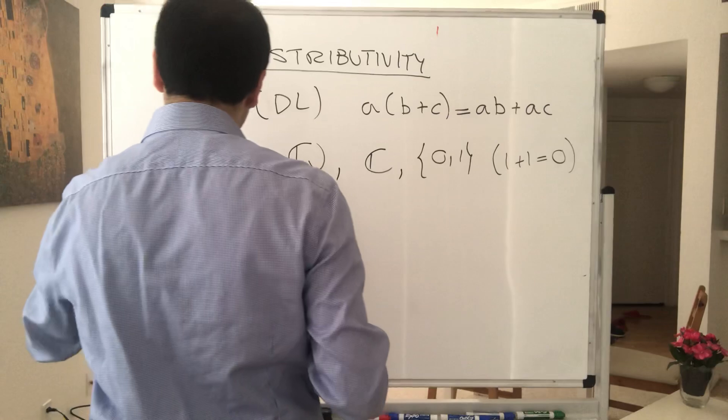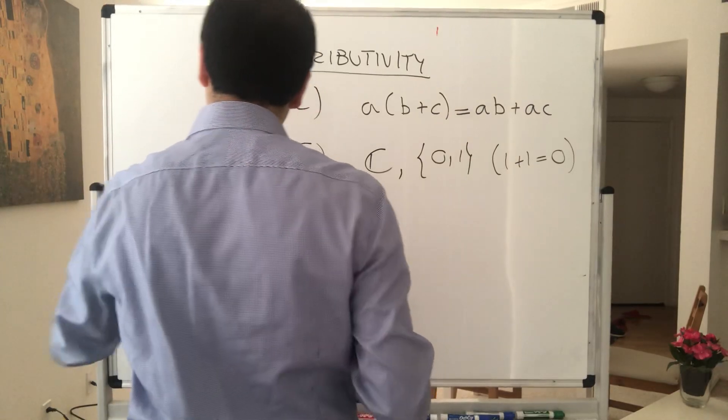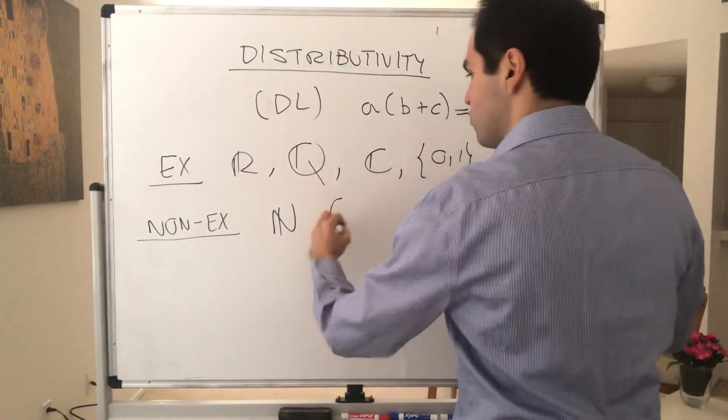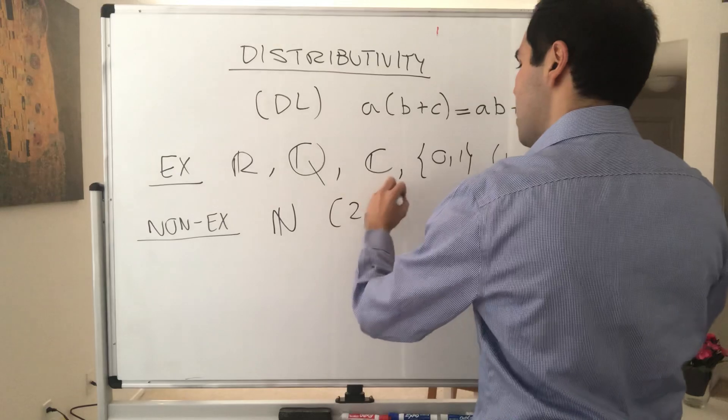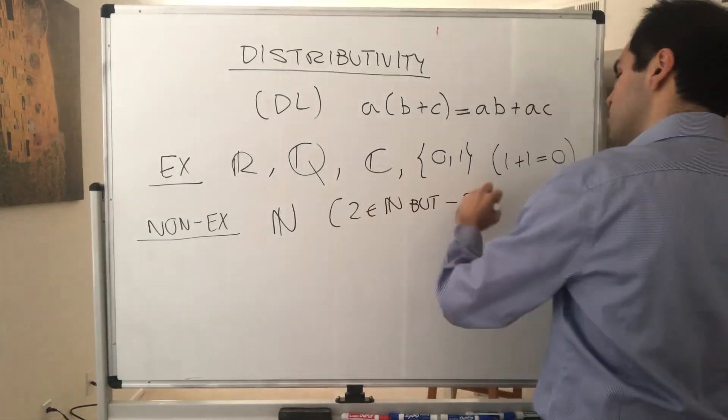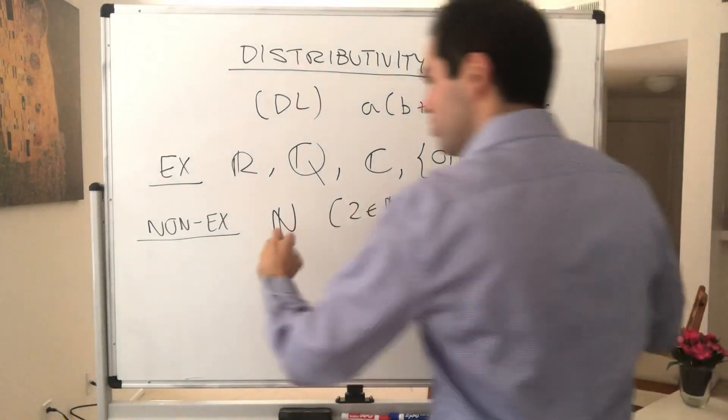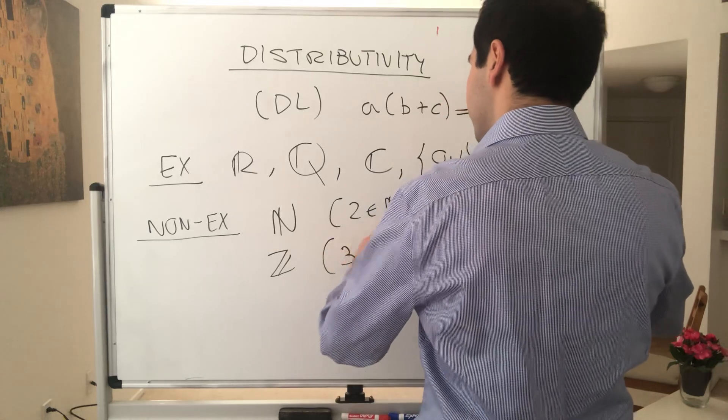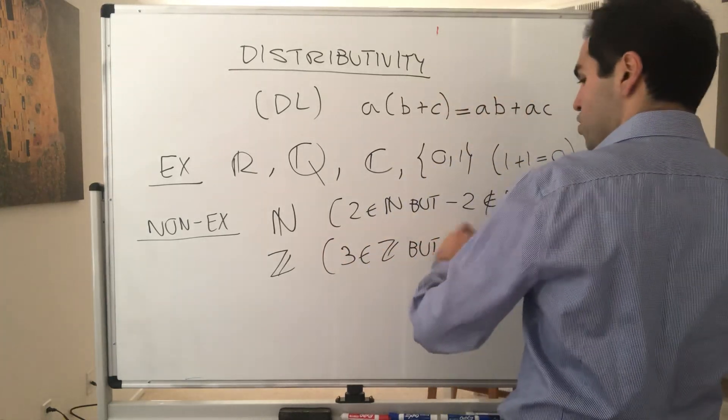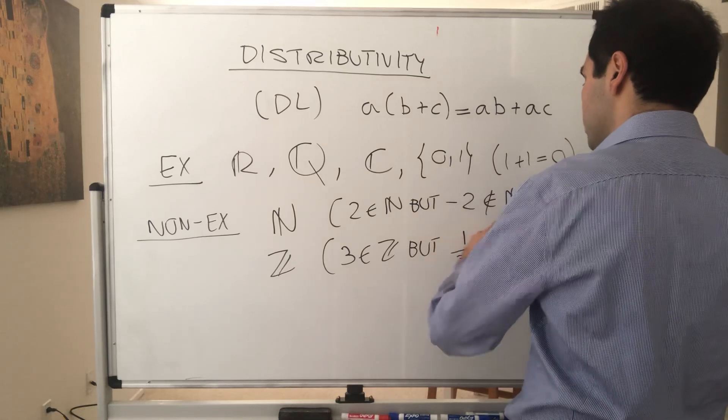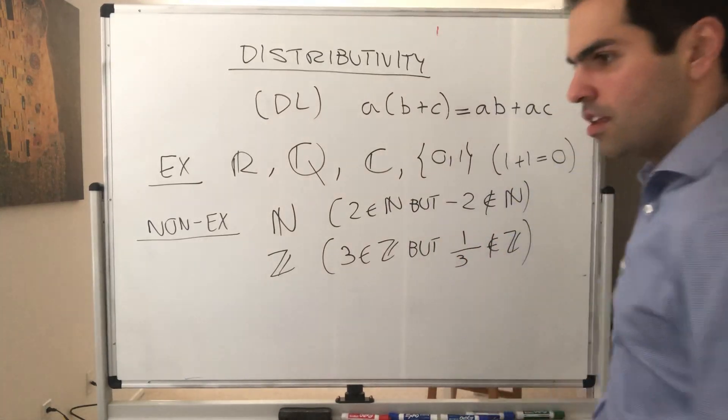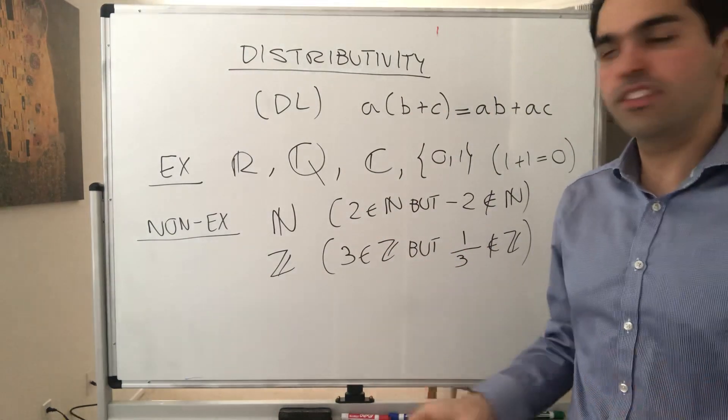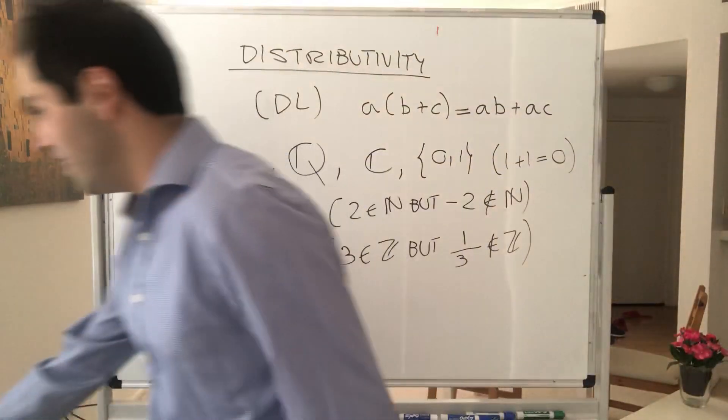But of course, what's a non-example? Well, the natural numbers, and why is it not a field? Because for instance, 2 is in N, but the additive inverse is not in N. Or also, the integers themselves, because for instance, 3 is in Z, but 3 inverse, which is 1 third, is not in Z. So already you can see the fact that R is a field really distinguishes R from its cousins, the natural numbers and the integers.